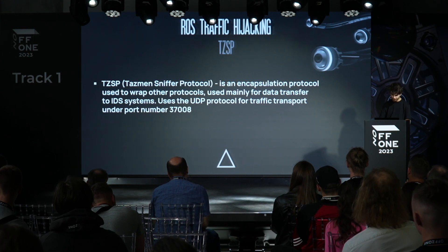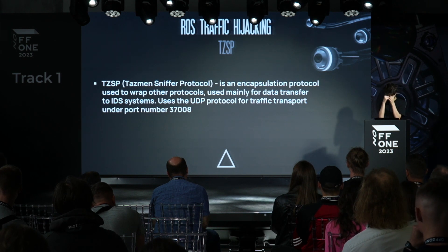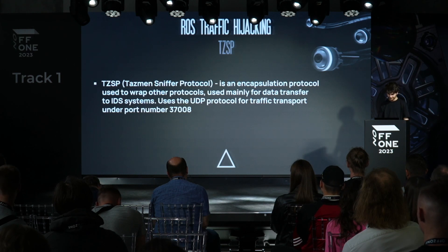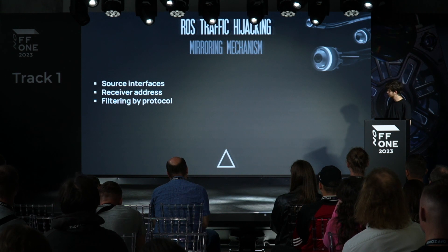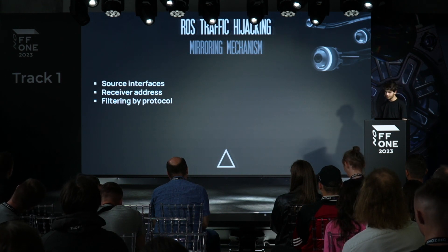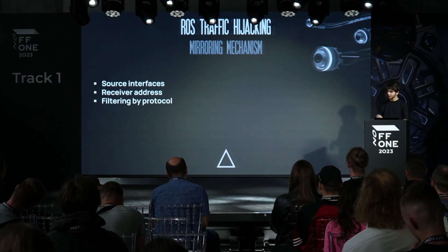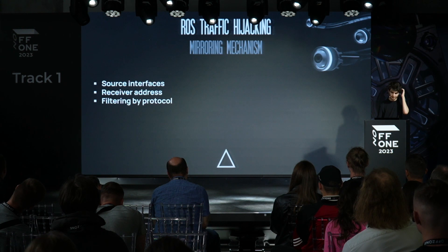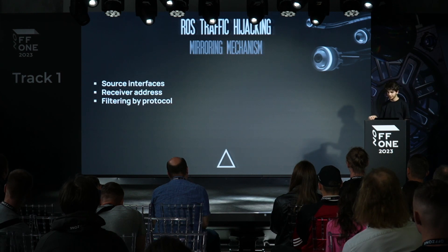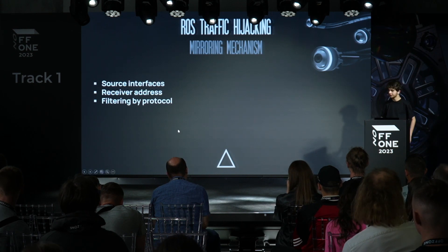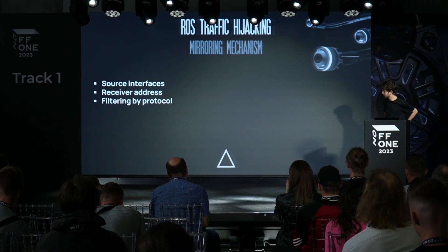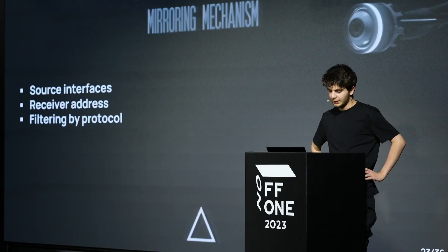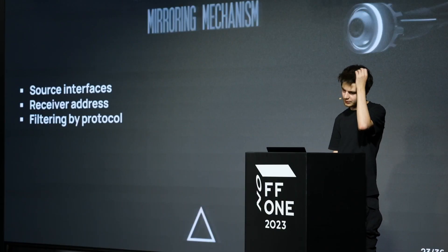The TZSP port number is 37008. Usually TZSP is used to build monitoring and control systems and to resend original traffic to SIEM systems. Configuration includes filtration conditions, source interfaces, and the receiver address — in my case, the receiver address will be the attacker's IP, so the mirrored traffic flows toward the attacker. This vector allows you to intercept data inside infrastructure, filtering by protocols — this parameter is extremely important because if you mirror too much traffic, the CPU will be overloaded causing an unintended DoS.